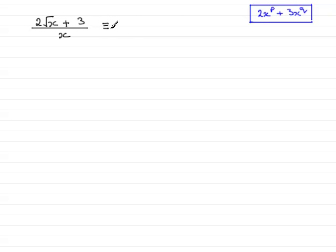First of all I'm going to write that this is identical to, now because we've got two terms on the top and a single term underneath, I can divide each of those terms by the x. So we'd have 2 root x over x and then plus 3 over x.